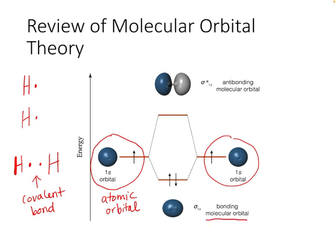Once you apply orbitals to a molecule, things can get a little more complex, so that's why we're looking at a simple molecule here. You end up with more stable bonding molecular orbitals and more unstable antibonding molecular orbitals. The two electrons from each hydrogen go into the more stable bonding orbital first, and then any other electrons would go into the antibonding molecular orbital. The bonding molecular orbital is given the symbol sigma and the antibonding molecular orbital is given the symbol sigma star.